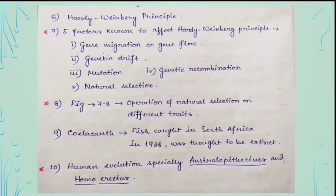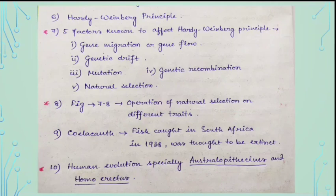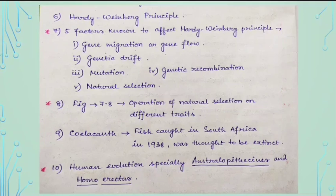The Hardy-Weinberg principle is a very important topic for NEET. Five factors affect it: gene migration or gene flow, genetic drift, mutation, genetic recombination, and natural selection. Figure 7.8 — the operation of natural selection on different traits — should be studied carefully, as it can appear directly in the paper. The coelacanth, a lobe-finned fish caught in South Africa in 1938, was thought to be extinct. For human evolution, Australopithecus and Homo erectus are the most important.